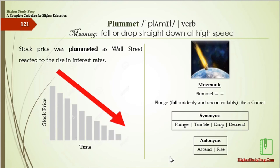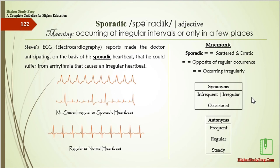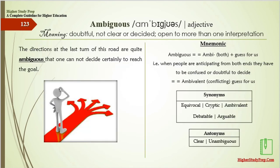The antonyms of plummet are ascend or rise. Sporadic means occurring at irregular intervals or only in a few places. Steve's electrocardiography reports made the doctor anticipate, on the basis of his sporadic heartbeat, that he could suffer from arrhythmia that causes an irregular heartbeat. Mnemonic: sporadic — scattered and erratic, that is opposite of regular occurrence. Synonyms are infrequent, irregular, or occasional.